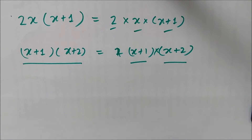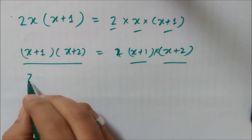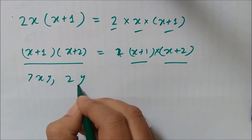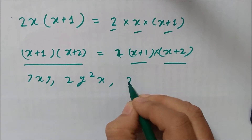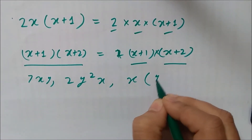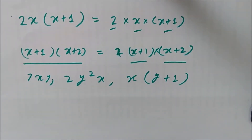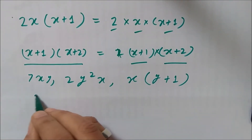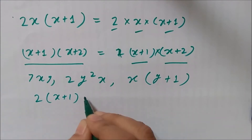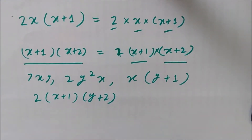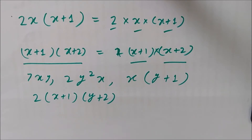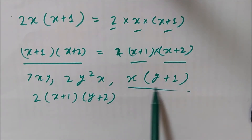When we factorize an algebraic expression, we write it as a product of factors. These factors may be numbers, algebraic variables, or expressions. Expressions like 7xy, 2y squared x, or x into y plus 1, or x plus 1 into y plus 2 — these expressions are already in the factor form. Their factors can just be read off from them. For example, the factors of x into y plus 1 are x and y plus 1.